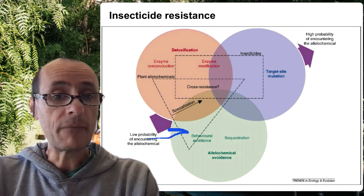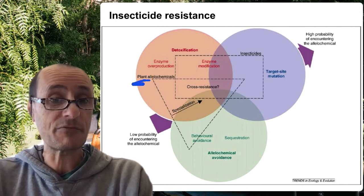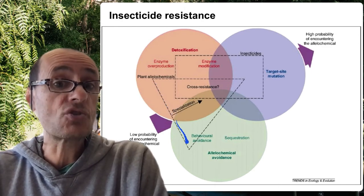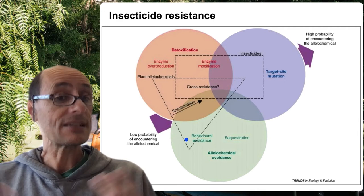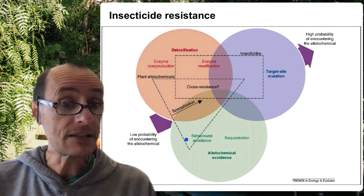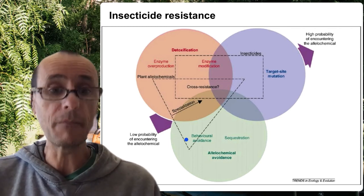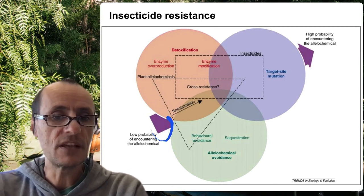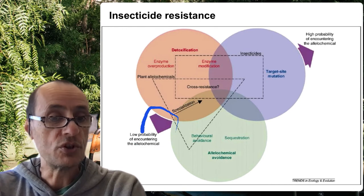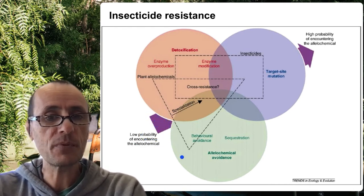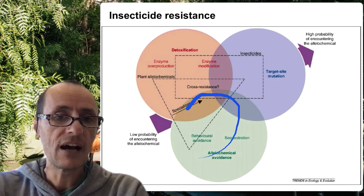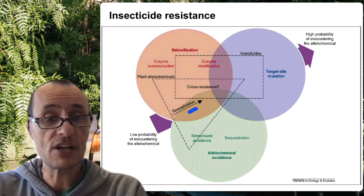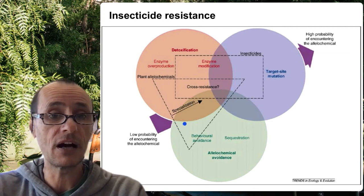Insects are under very high selective pressure, because if they can't deal with this, they are going to die. There is very strong selective pressure to select for traits that allow them to deal with these compounds. Those insects that have such traits are going to become more common in the population. These include things like reducing the likelihood that these chemicals actually enter the body in the first place — allelochemical avoidance mechanisms such as behavior or sequestration — which is also a way insects dealing with insecticides can similarly cope.